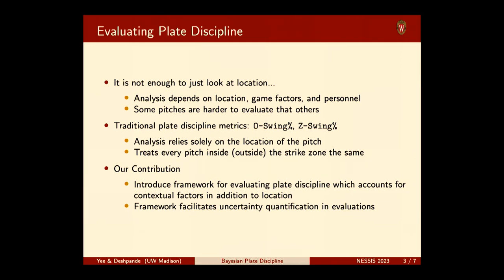When thinking about existing approaches to this problem, common metrics are rates at which batters swing when pitches are thrown inside the strike zone, and similarly for outside. These analyses are limited because they rely solely on location to determine what the batter should be doing, and they treat every pitch the same — a pitch right down the middle is treated the same as one on the edge. Our contribution is a framework for determining the optimal decision given all contextual factors, and we additionally quantify our uncertainty in these decisions.